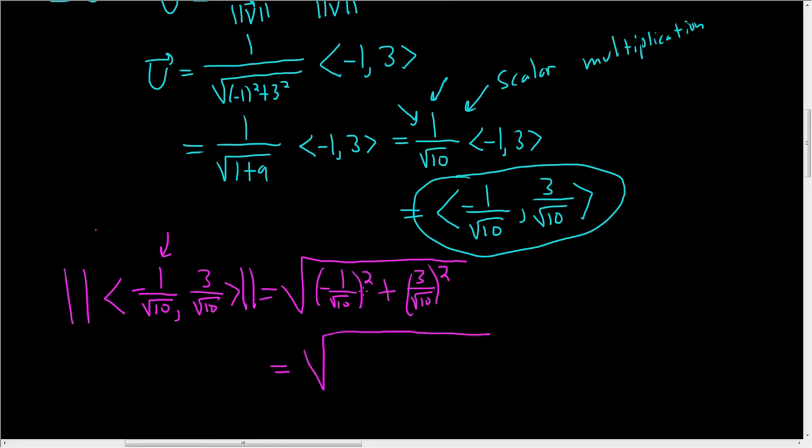Well, there's a negative sign here. It's going to go away when we square it. So 1 squared is 1 and the square root of 10 squared is 10 plus 3 squared is 9 and the square root of 10 squared is 10. So 1 plus 9 is 10. So we get 10 over 10. So that's the square root of 1.